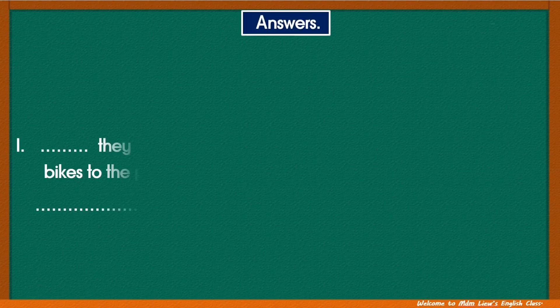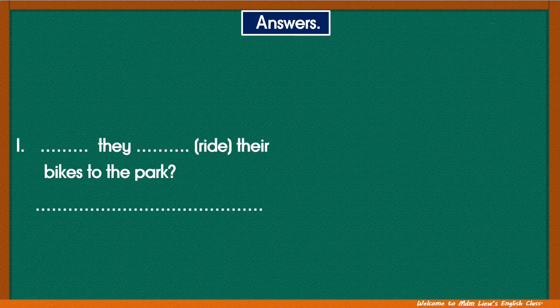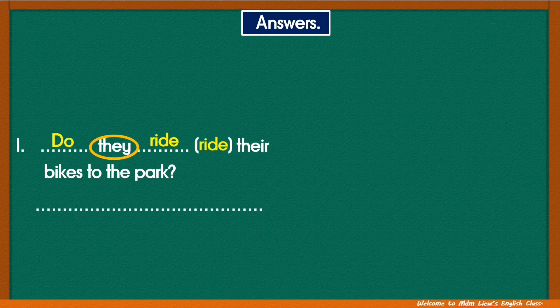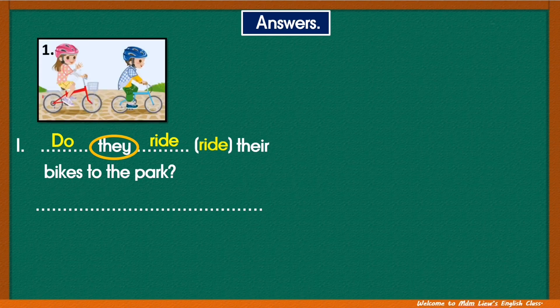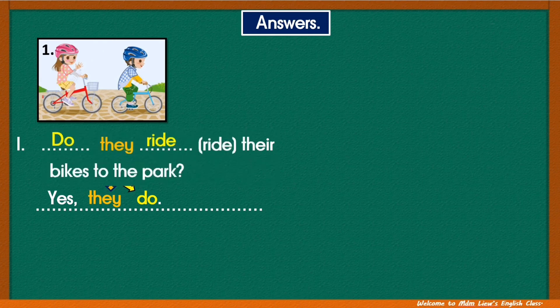Let's check the answers. Number one: first, look at the subject — they. Is it singular or plural? Plural, right? So we need to use do. Then the verb in the base form: ride. Do they ride their bikes to the park? Looking at the picture — yes, they do. Question: Do they ride their bikes to the park? Answer: Yes, they do.